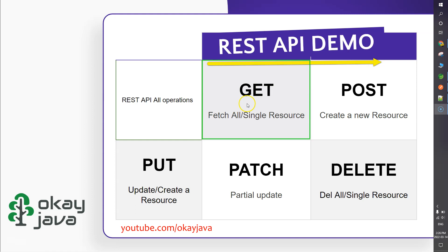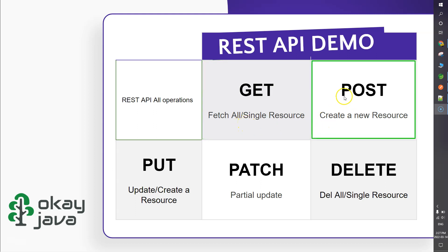We are going to discuss the GET function. We use GET to fetch either a single resource or multiple resources from the database. Then we'll talk about POST mapping.